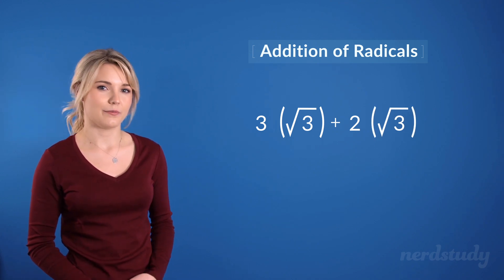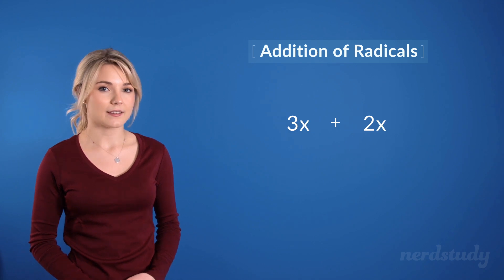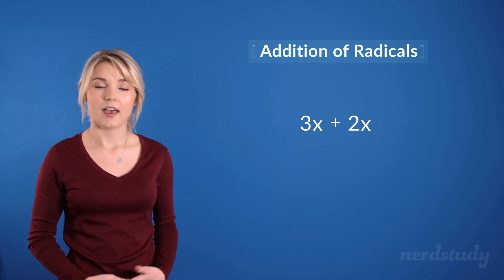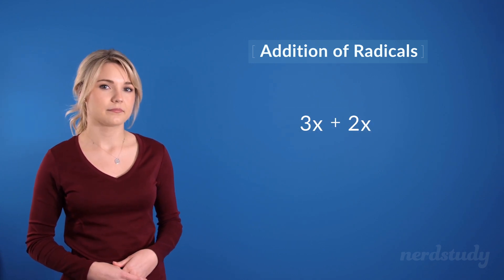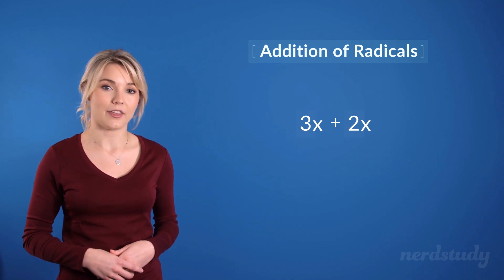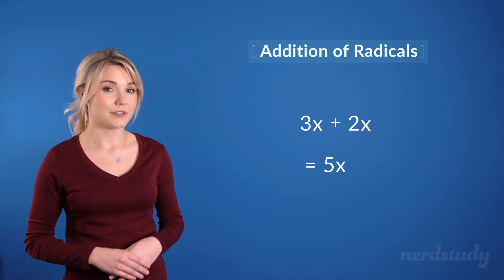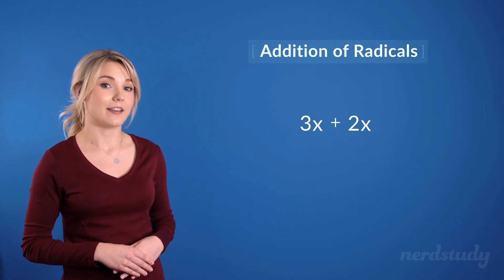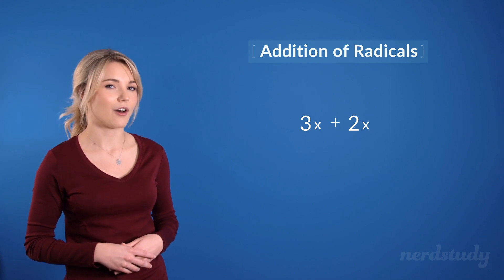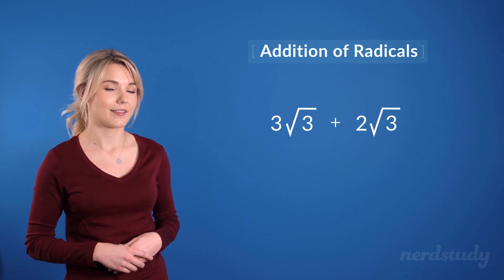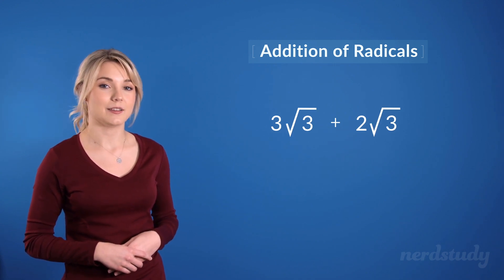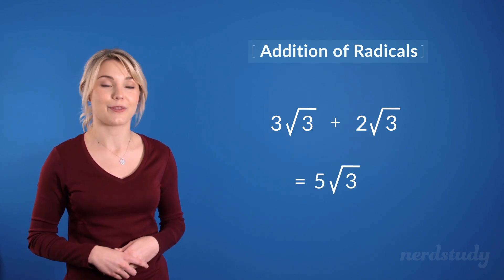So I have a question for you. If we had 3x plus 2x instead how would we simplify this? Well we would just add the coefficients together as we normally would to get 5x. So if I told you that these radicals can be added in a similar manner then how would we solve for this? Well all we would need to do is simply add the coefficients and we'd get 5 root 3.